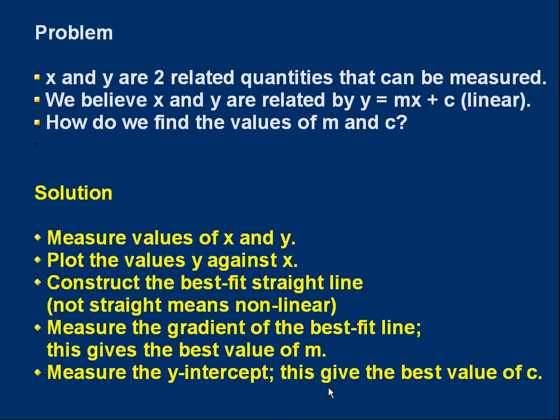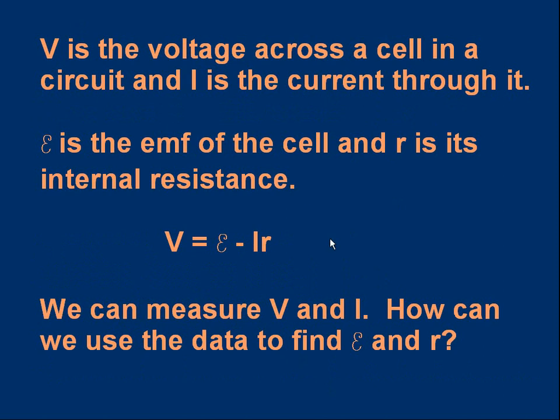Let's use it. Here's a more realistic example. V is the voltage across the cell in the circuit, and I is the current through it. There are two variables, voltage and current. They can change depending on the resistance of the rest of the circuit. E, this curly E is the symbol for EMF, electromotive force. E is the EMF of the cell, and the small letter R is the cell's internal resistance. They're fixed amounts. They're constants.